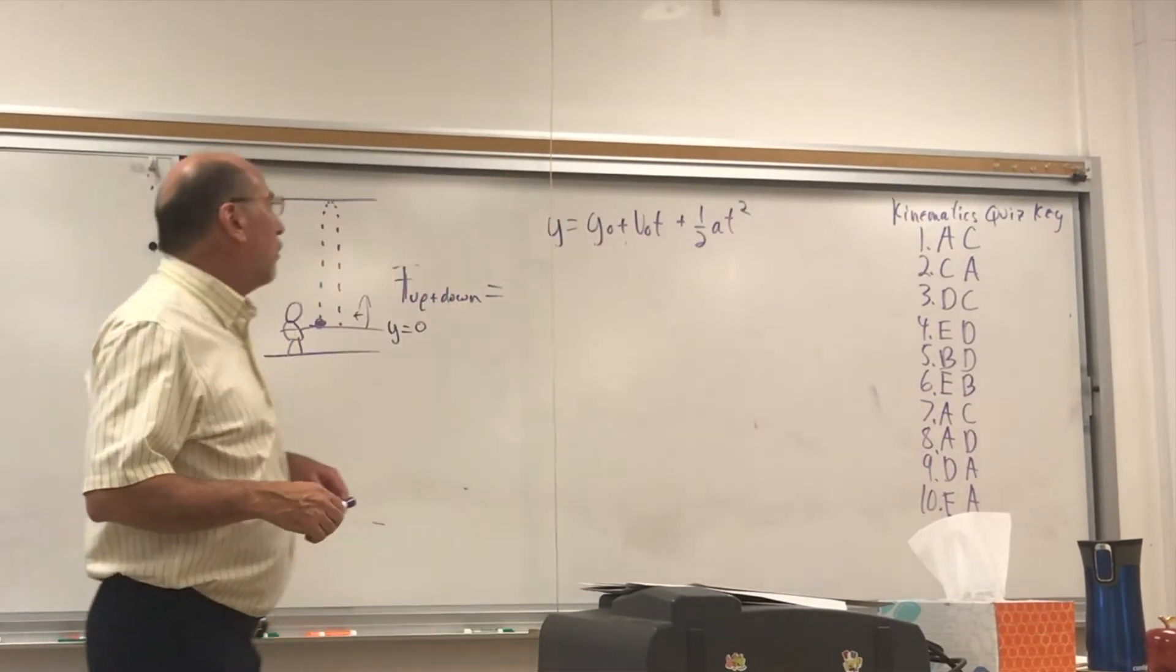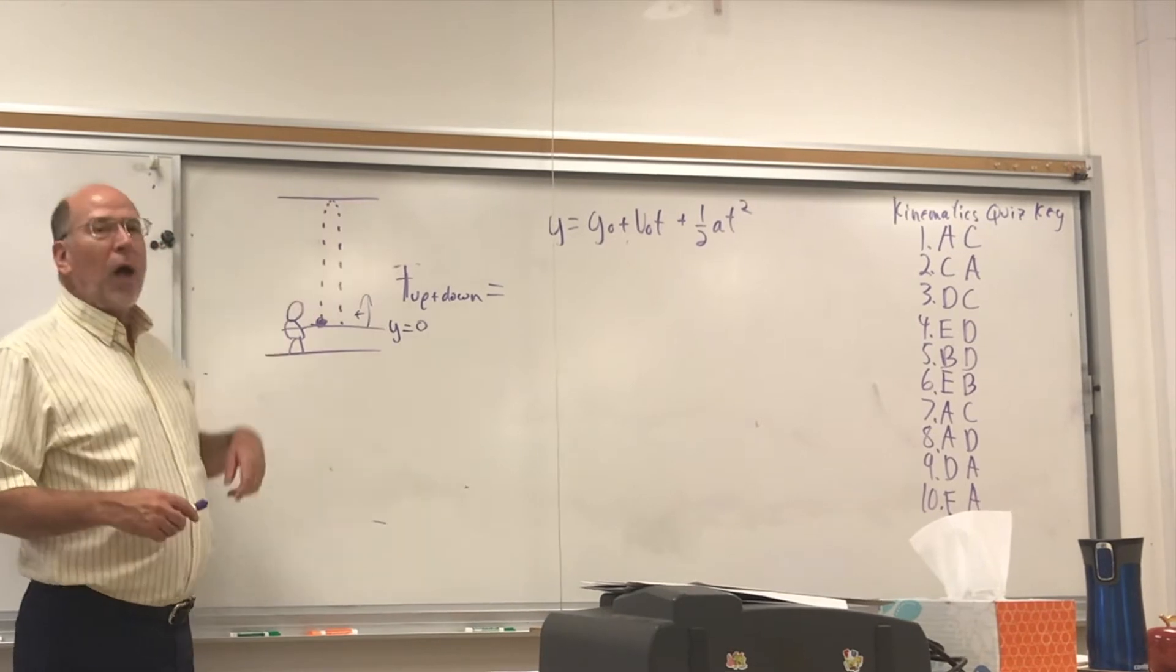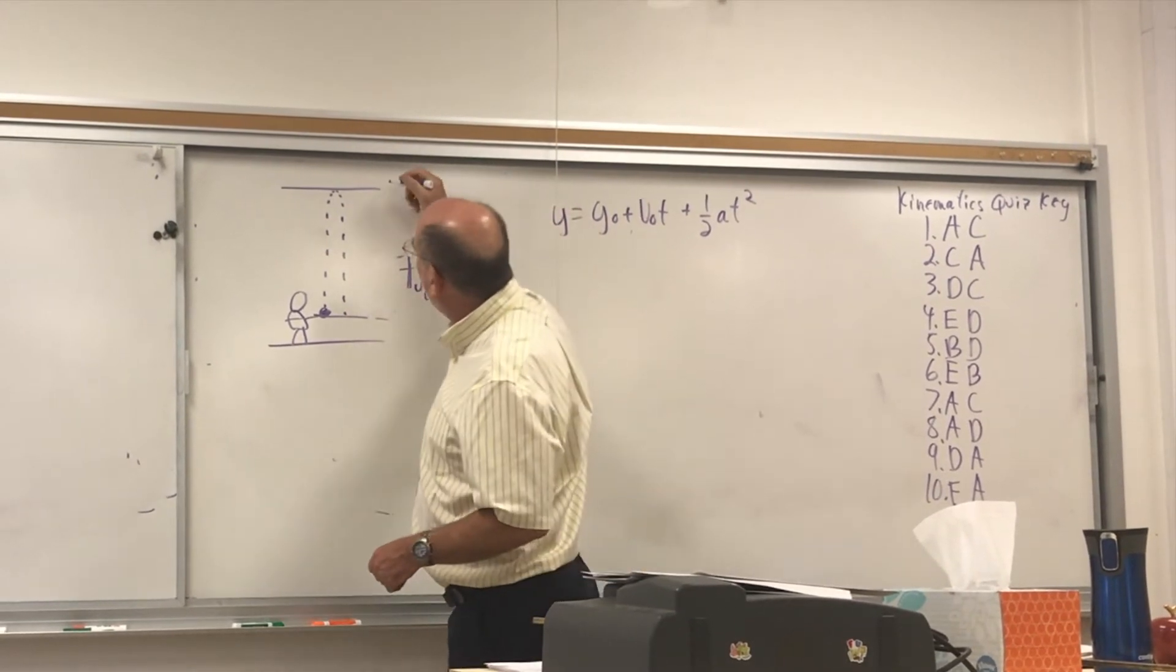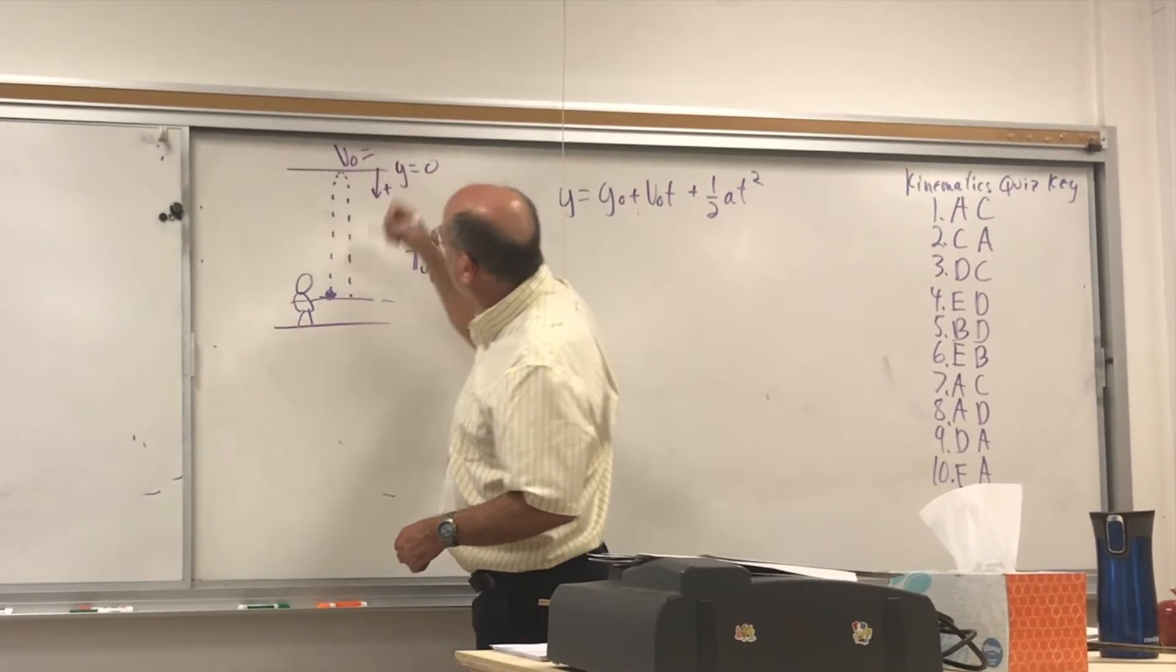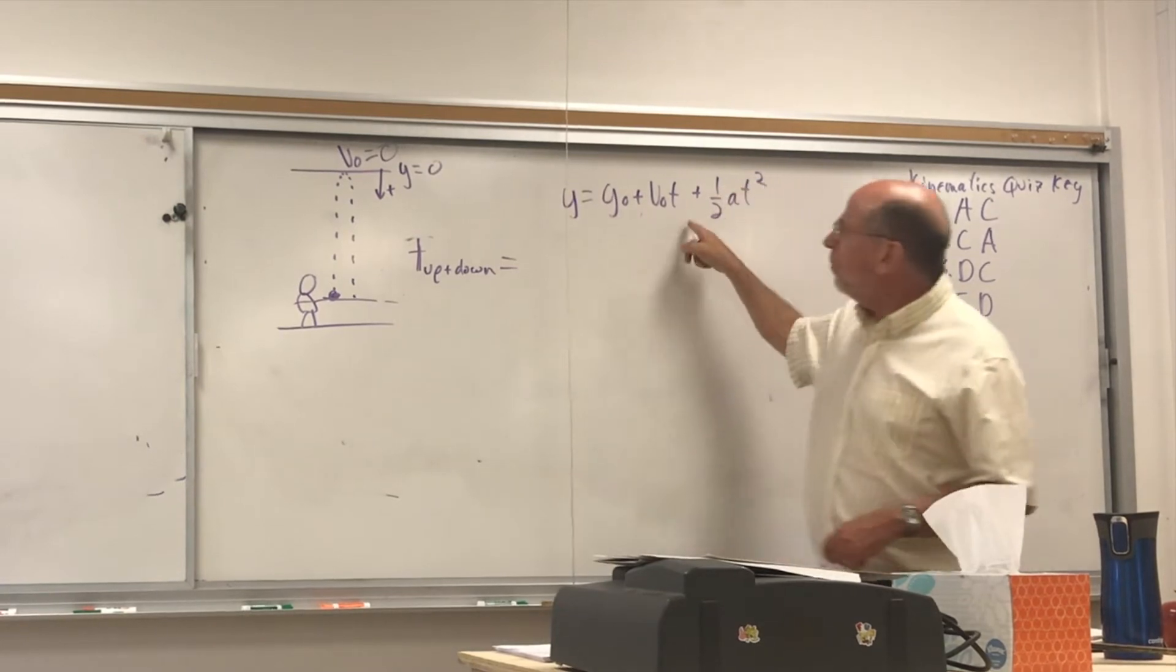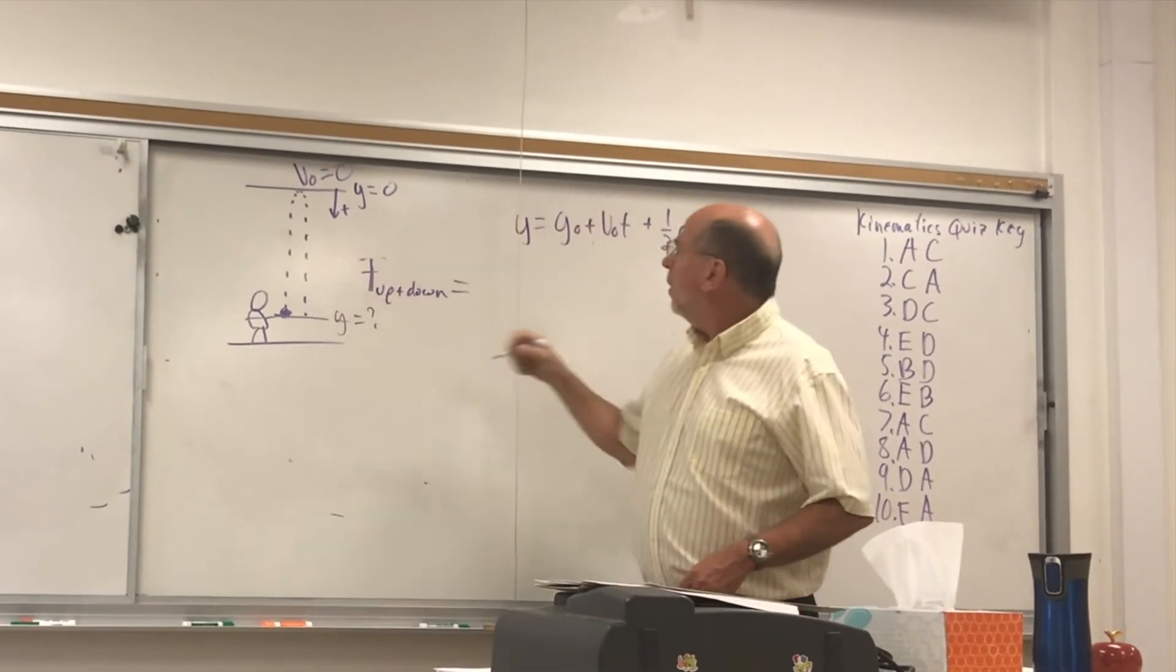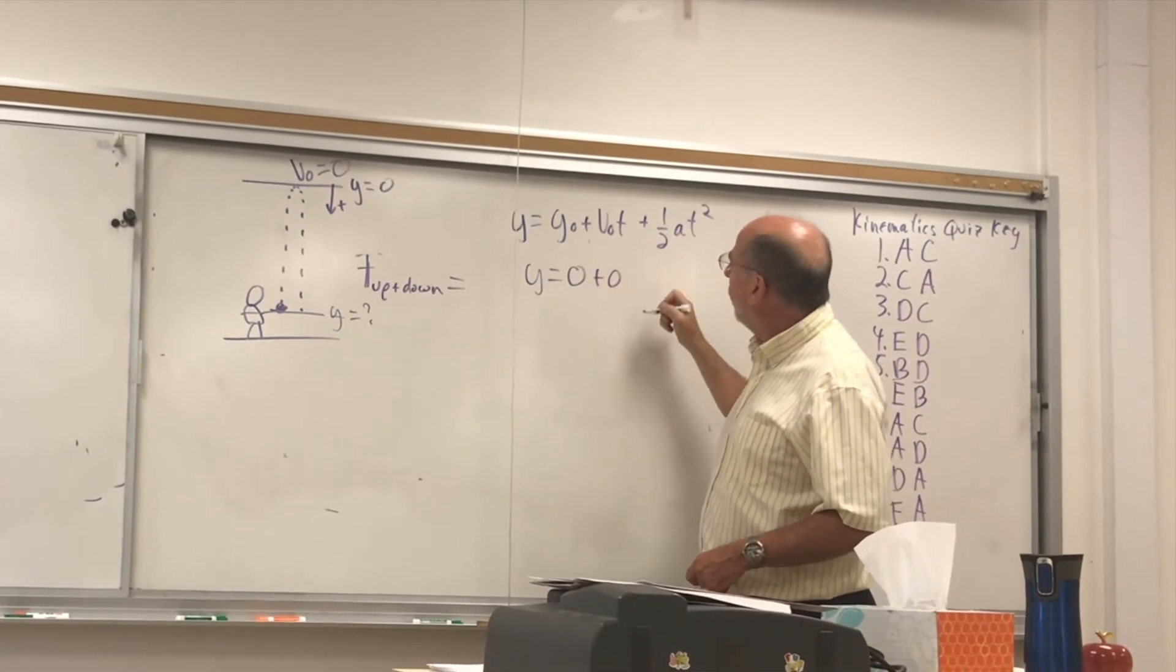But another way is to exploit the symmetry of the problem. So how fast is it going at the highest point? Zero. Zero. So I'm going to change my problem. And I'm going to say the origin is the ceiling. Down is positive. And now what is V zero? Zero. Zero. And so I can work this problem that way. And so Y would be how far I go. And Y is zero. I'd make zero. And that's zero.